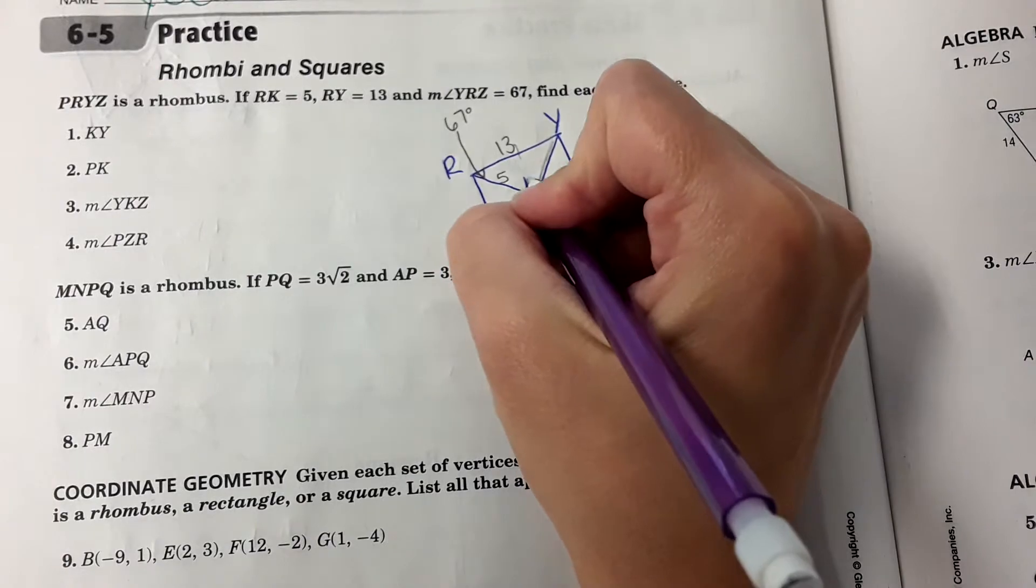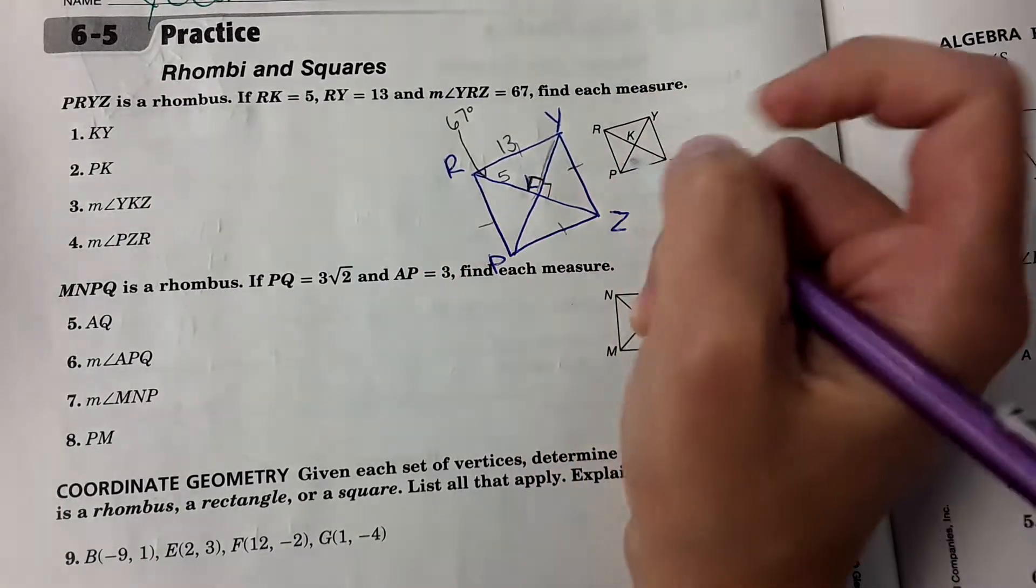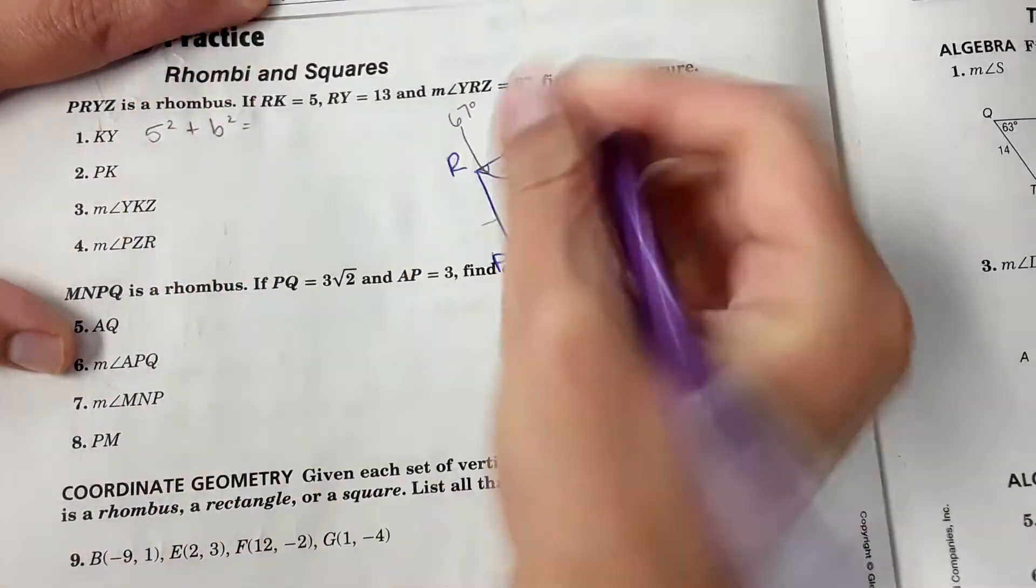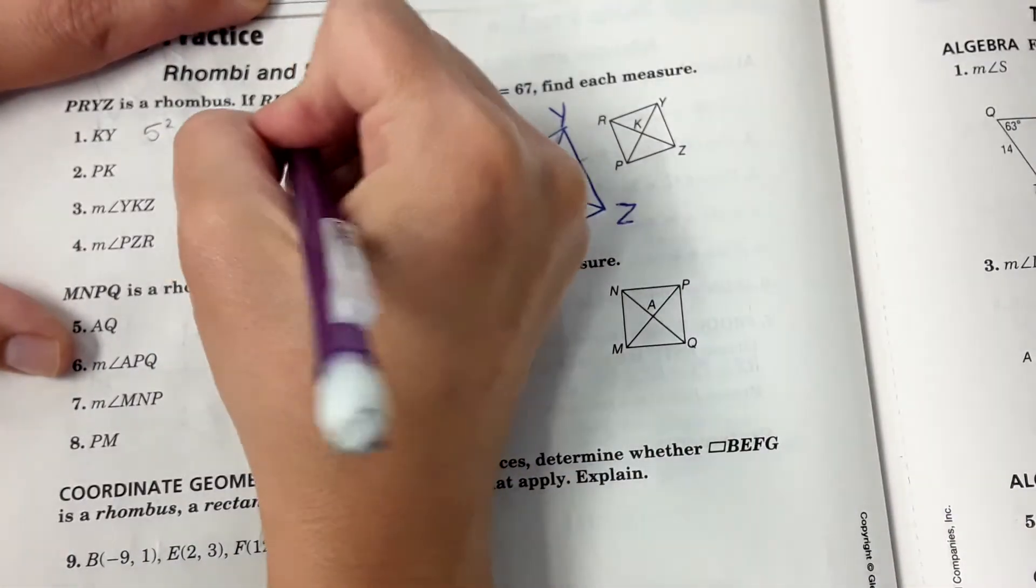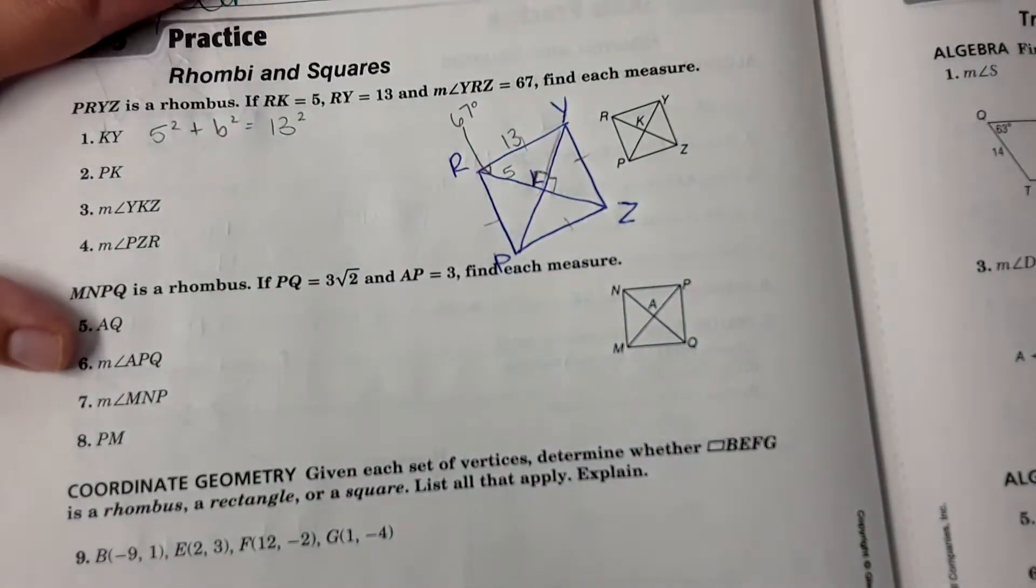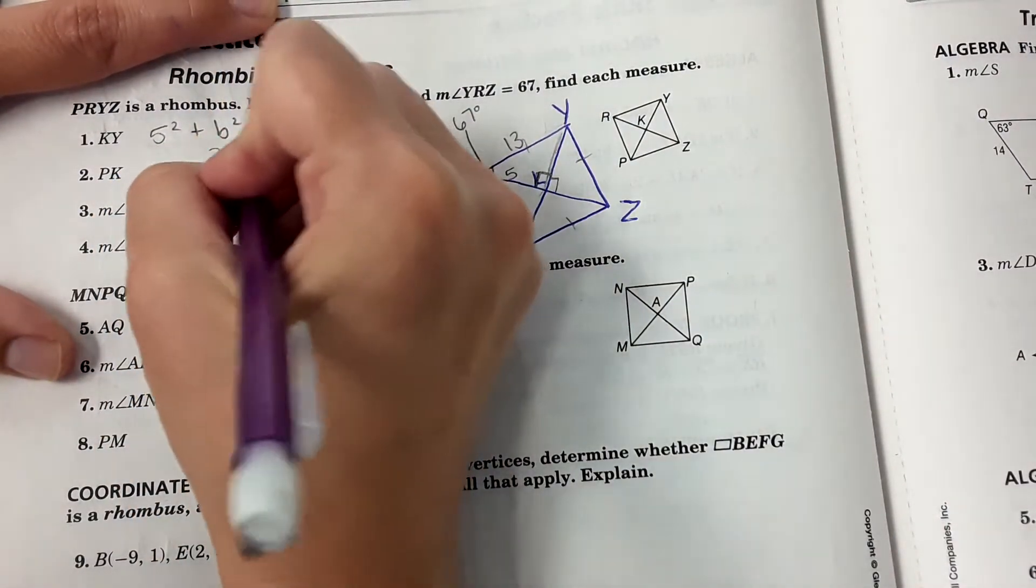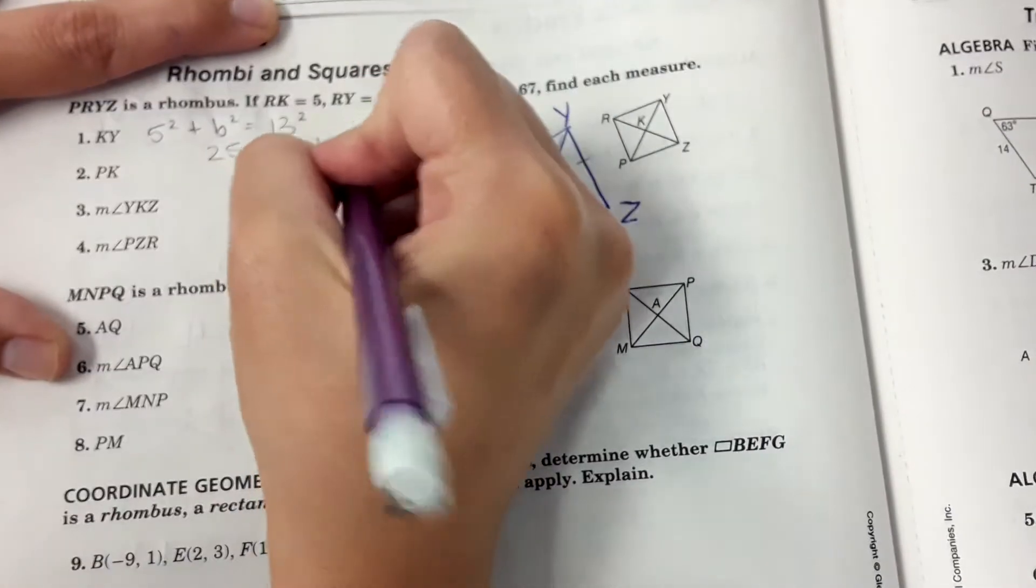Because remember, these are 90 degree angles. So you have a right triangle here. You can do 5 squared plus B squared equals the hypotenuse 13 squared. I'm just going to take some room. 25 plus B squared equals 169.